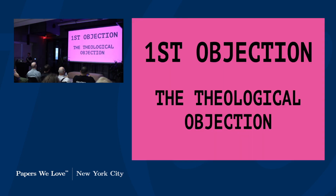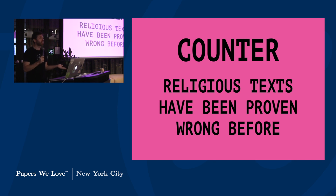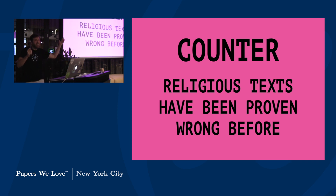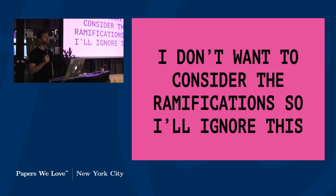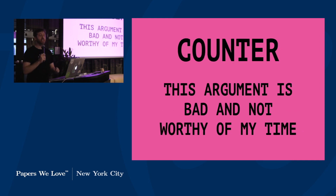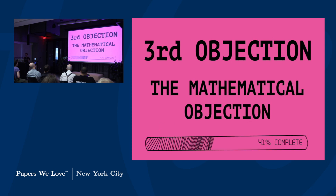The first objection is the theological objection — the fact that machines don't have souls. Turing counters this by saying that religious texts have already been disproven before, such as with Galileo and Copernicus. He also brings up the idea that if we construct a machine good enough to beat the imitation game, God could just put the soul right into the machine. His second objection, which he labels the 'head in the sand' objection, is that people don't want to consider the ramifications of a machine being intelligent. His counter is simply that this is a bad argument.